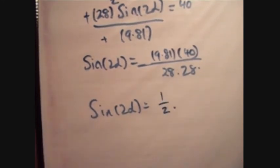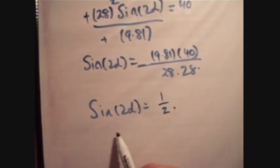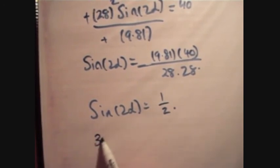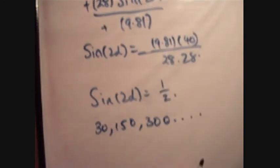So sine 2 alpha is a half. We already know that, we know that sine 2 alpha is a half. We know the angles which give sine of a half, and they are 30, 150, 300, and loads of them.